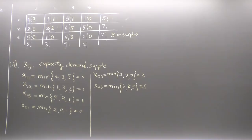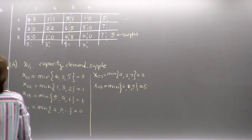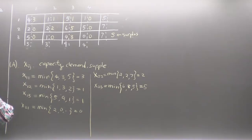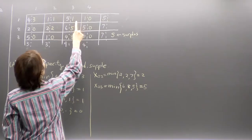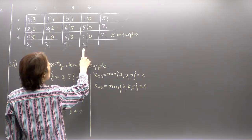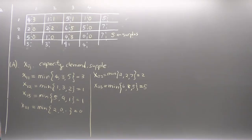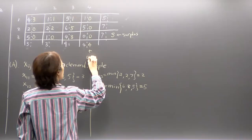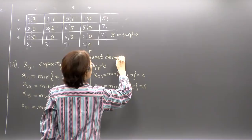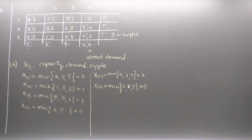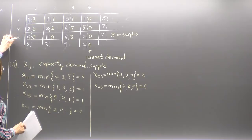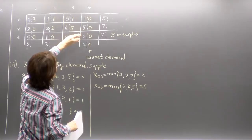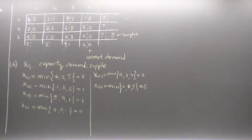Now let's look at demand. Destination one: demand is met — I shipped 3 units. Destination two: demand also met. Destination three: 1 plus 5 plus 3 — demand is also met. But for destination four, it needs 4 units and nothing is being shipped there — the demand is not met. The amount unmet I put here: that 4 means unmet demand. This means I should somehow ship out of warehouse three and adjust the table so that in the end it ends up at destination four.